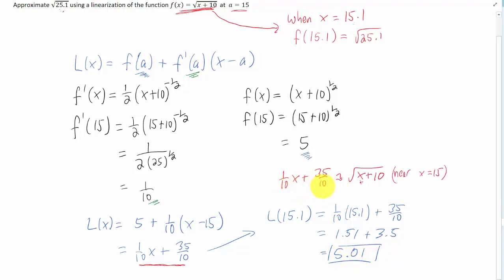I just added a note up here that this linear approximation is really only close to this function for x values that are near 15. And also we can plug the square root of 25.1 into our calculators to check this answer. And I'm getting approximately 5.009990. So our approximation of 5.01 was pretty good. I think that's it for this problem.